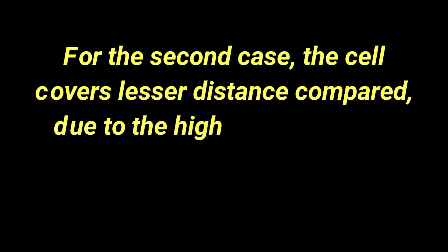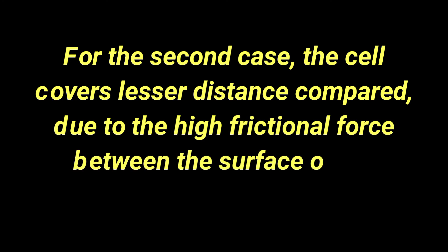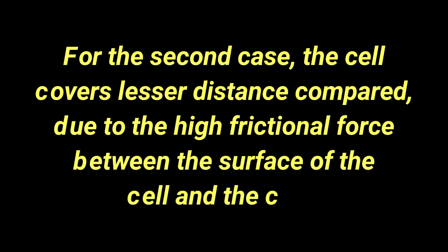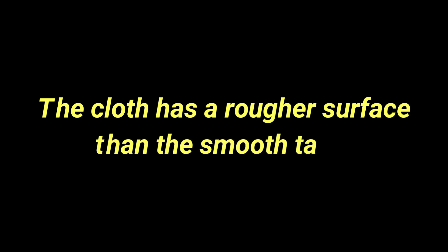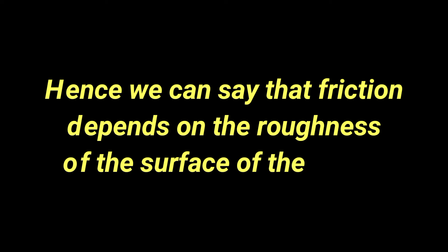For the second case, the cell covers a lesser distance due to the high frictional force between the surface of the cell and the cloth. The cloth has a rougher surface than the smooth table. Hence we can see that friction depends on the roughness of the surface of the object.